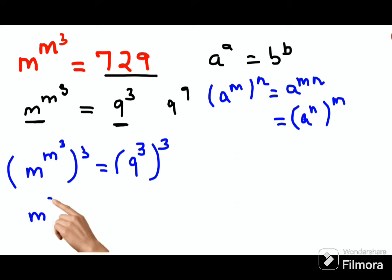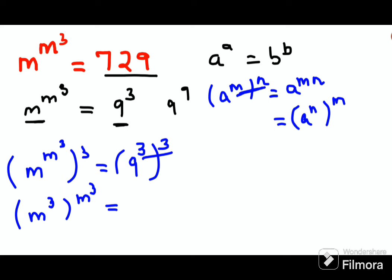m raised to 3 can come ahead, and this whole m raised to 3 can go out. This then becomes 9 raised to 3 into 3. Right? We multiply the indices, so we get 9 raised to 9.